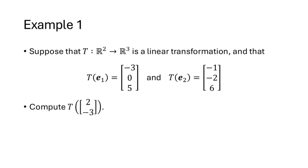Suppose that t is a linear transformation and we're given that t(e1) is the vector (-3,0,5), t(e2) is the vector (-1,-2,6), and we're asked to compute t of the vector (2,-3). Notice that this is different from the linear transformations we've studied earlier, because we're not given an explicit formula for t — we're just given these two pieces of information.